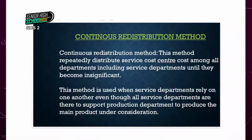When the costs have been incurred by one service — for example, when clinical service was providing services to the maintenance service — the costs incurred by the clinical department will have a part apportioned to the maintenance service, because they provide reciprocal services to each other. So when sharing the costs of one service center, the other service center will also be apportioned an amount. The continuous method tells us to repeatedly distribute service cost center costs among all departments, including service cost departments, until it becomes insignificant. This method is used when service departments rely on one another for services or support to produce goods and services.